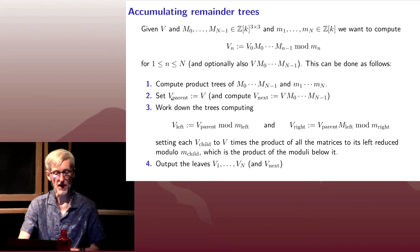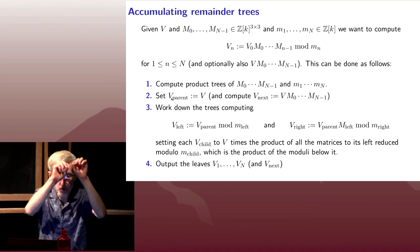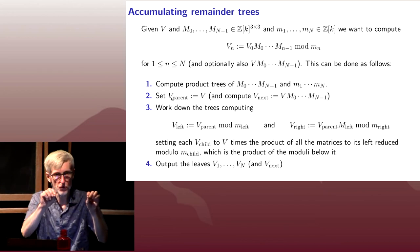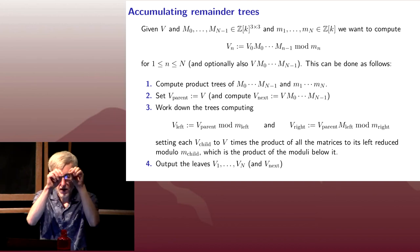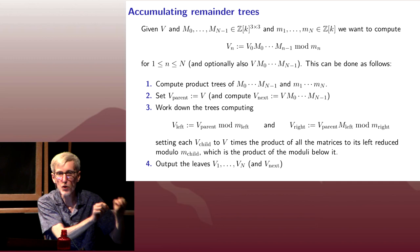And what do you do? You take your parent and you send it down to the left child, and all you do is reduce modulo the modulus at the left child. And whenever you go to the right child, you take your parent vector, you multiply it by the matrix on the left child, and you reduce modulo the modulus of the right child.